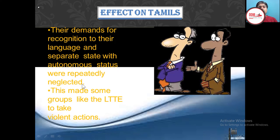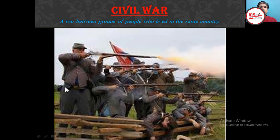Their demands for recognition of their language and a separate state with autonomous status were repeatedly neglected by the government. This caused some groups, like the LTTE — Liberation Tigers — to take violent action. This entire situation gave birth to a civil war, which is a war between groups of people living in the same country. The majority and minority were fighting within Sri Lanka itself, which is why it is called a civil war.